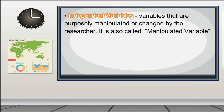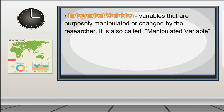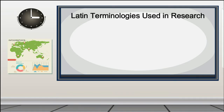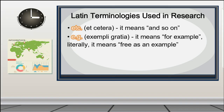Independent variables — variables that are purposely manipulated or changed by the researcher; also called the manipulated variable. Dependent variables — variables that depend on other factors that are measured; these variables are expected to change as a result of an experimental manipulation of the independent variable or variables. Now let's take a look at the terms used in research that are abbreviated — these are Latin words and non-English structures. Etc. means 'and so on.' E.g. — exempli gratia — means 'for example,' literally meaning 'free as an example.' Et al. means 'and others.' There you have it — the technical terms used in research.